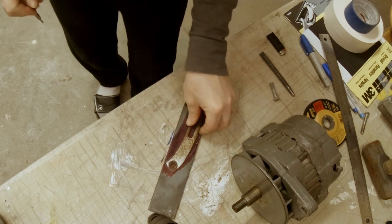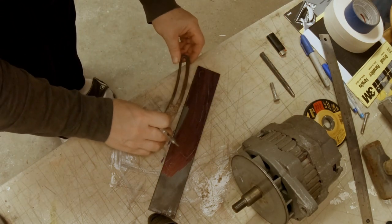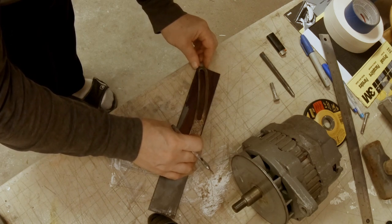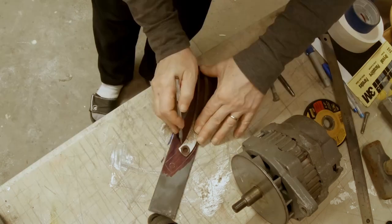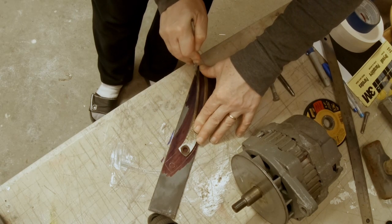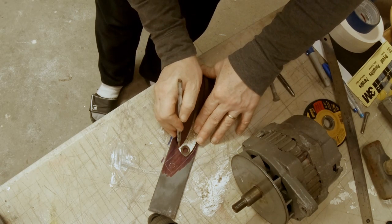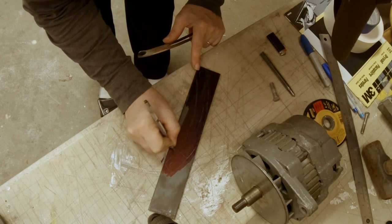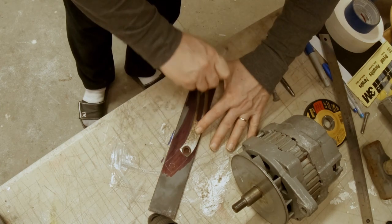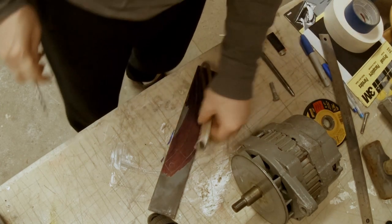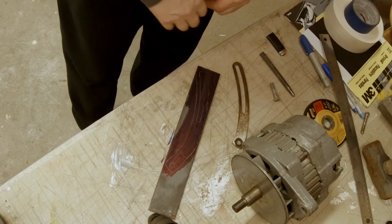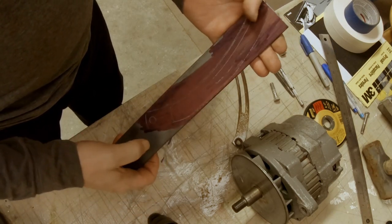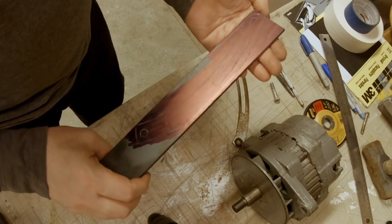Mark the hole, and then we'll also increase the thickness of this bracket a little bit. Alright, that looks good. We'll punch a couple of holes in here and then we'll take this outside and cut it.